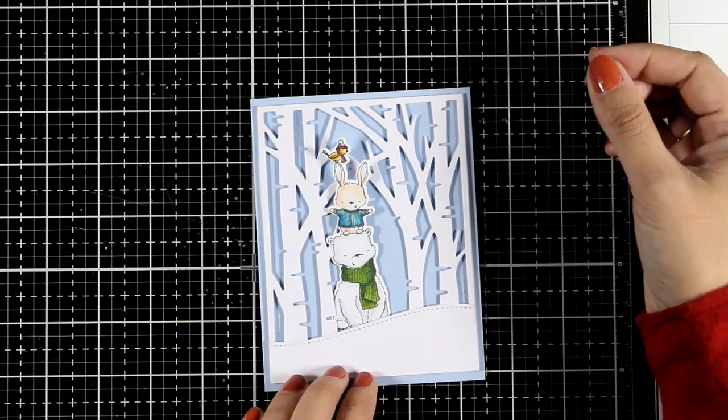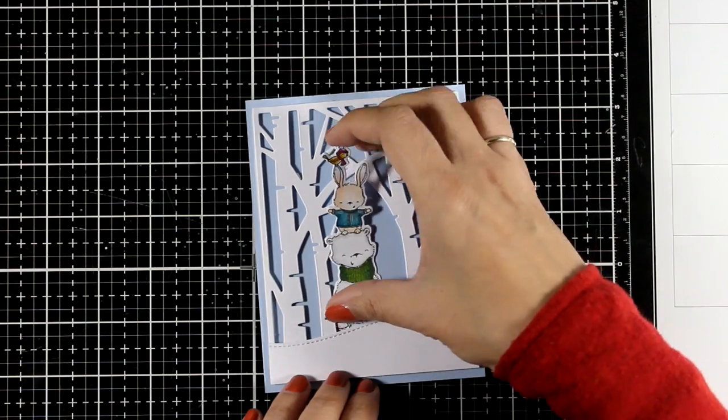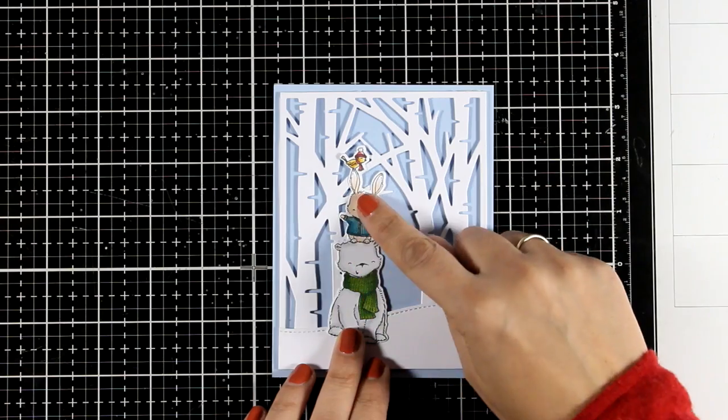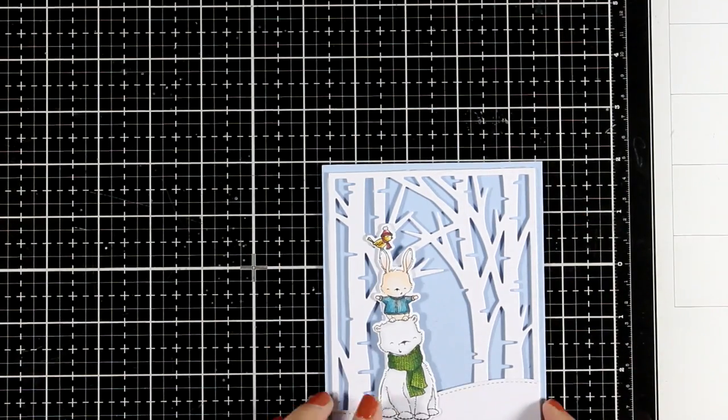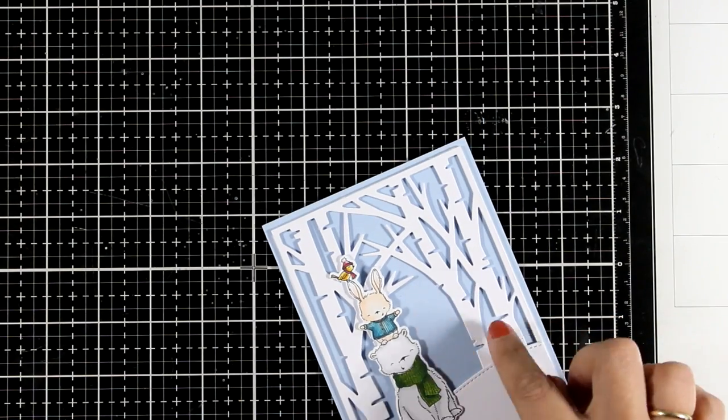Now you can play with the critters and your tree background. You can have them popping from behind, or you can stick them directly on top, which is what I'm going for with this card. If it was just one critter I think I would go with it popping from behind a tree. It would make it look even more fun.